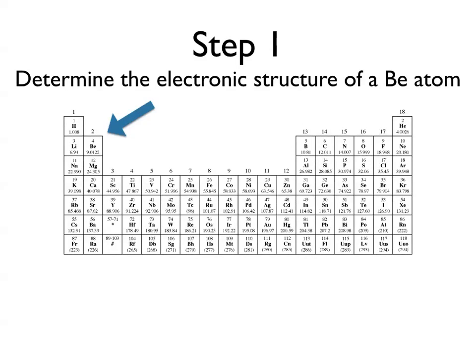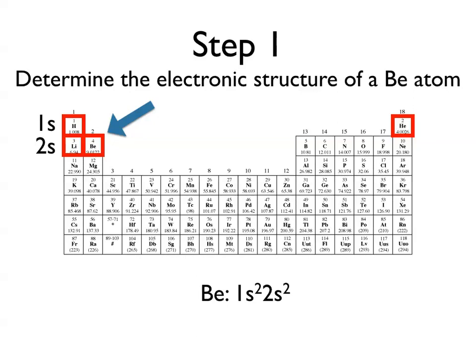Beryllium is in the second row, so we have to build up its electronic structure from the top row going down. Starting at the top row, we're looking at the 1s row, which includes hydrogen and helium. Since there are two atoms in this row, each representing one electron, we start with 1s². After that we go down to the 2s row, which also has two atoms leading up to beryllium, giving us 2s². So the beryllium atom's electronic structure is 1s² 2s², for a total of four electrons.